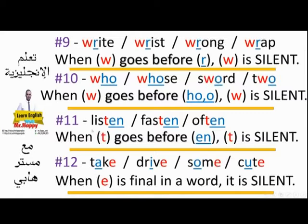Rule eleven: listen — don't say 'listen'; fasten — don't say 'fasten'; often — some native speakers prefer to say 'often', and that's okay. You can say 'listen', 'fasten', 'often' or 'often'. The T is silent when it goes before EN. Rule twelve is a little bit different because E is at the end of the word so we don't pronounce it. If there is no E, we'd say 'tack', 'driv', 'som', 'cut' — that's why they put E, so we say 'take', 'drive', 'some', 'cute'.